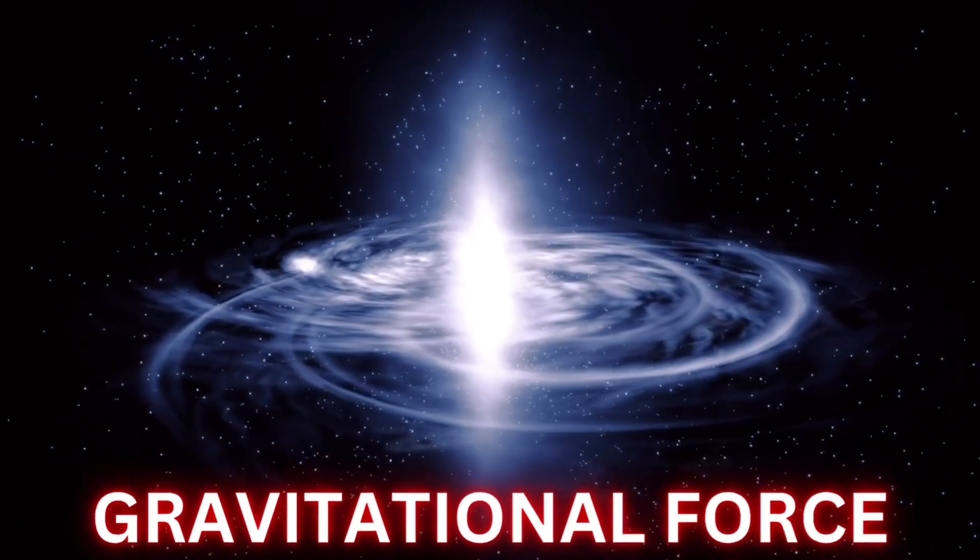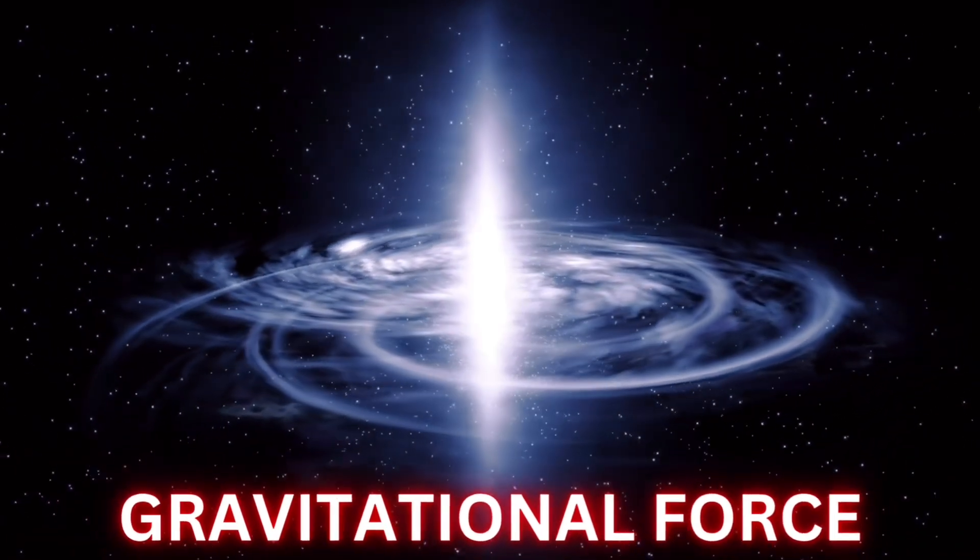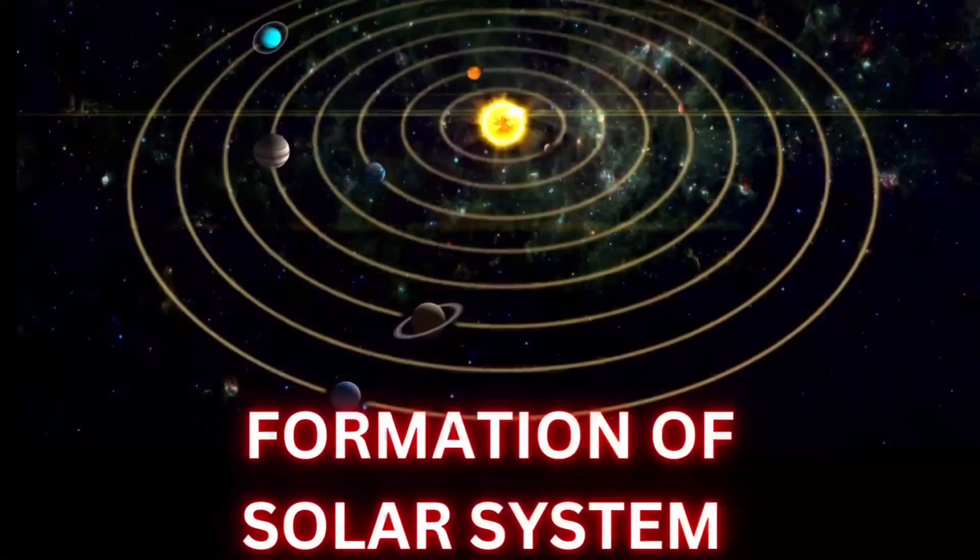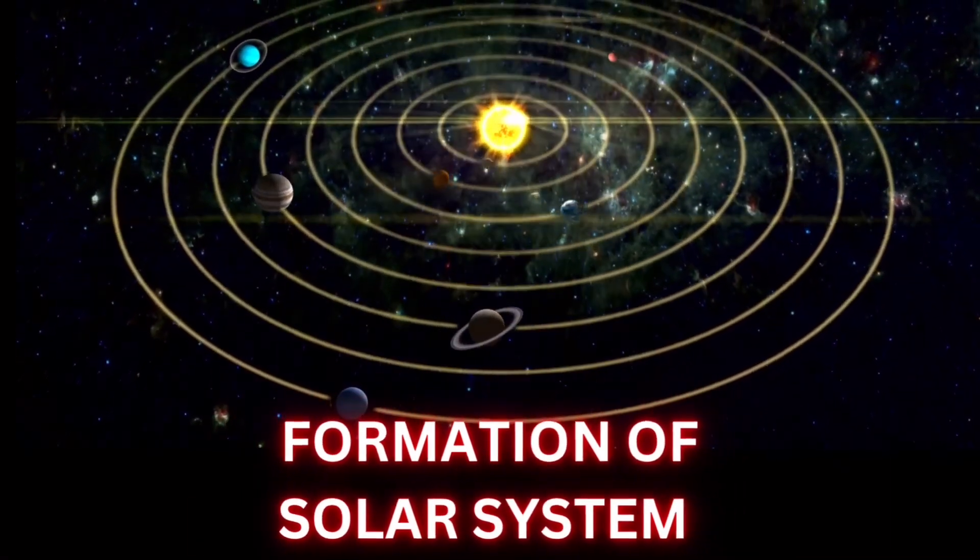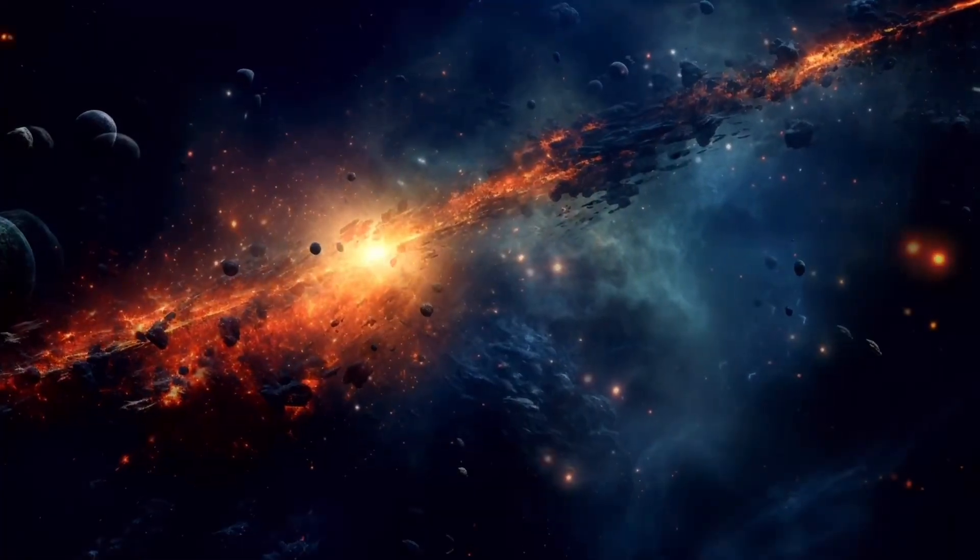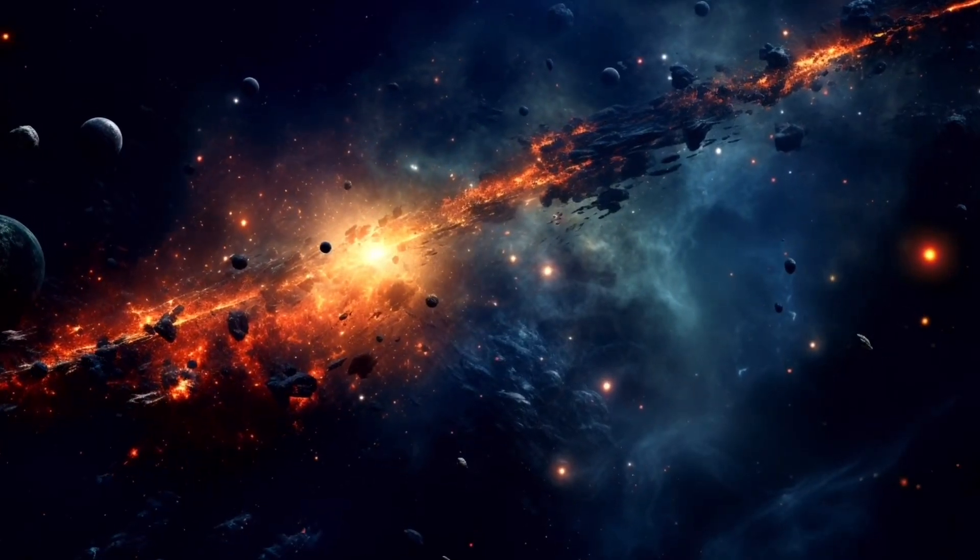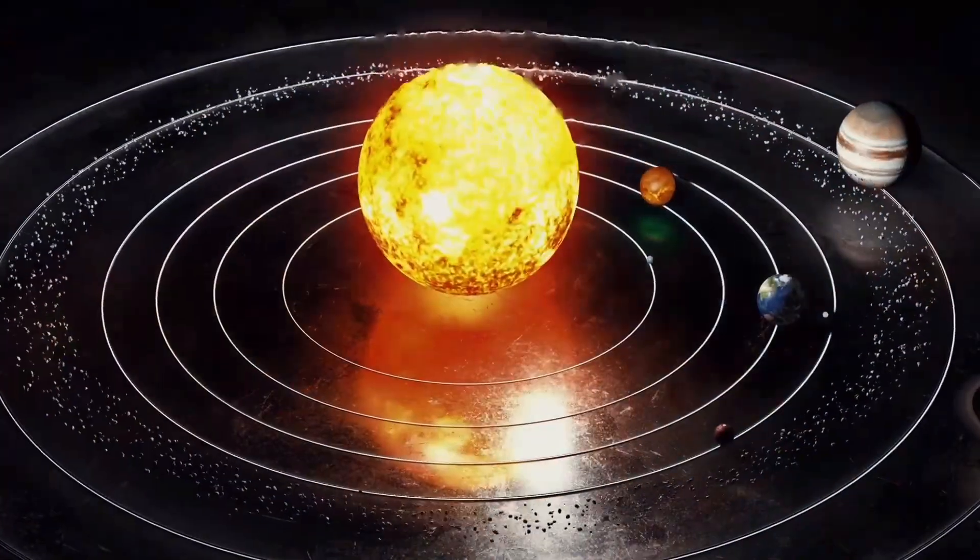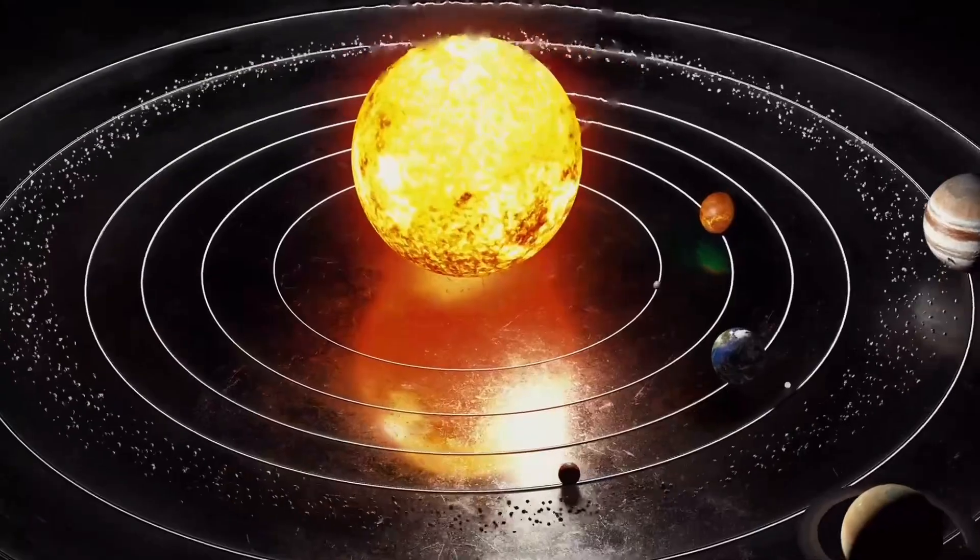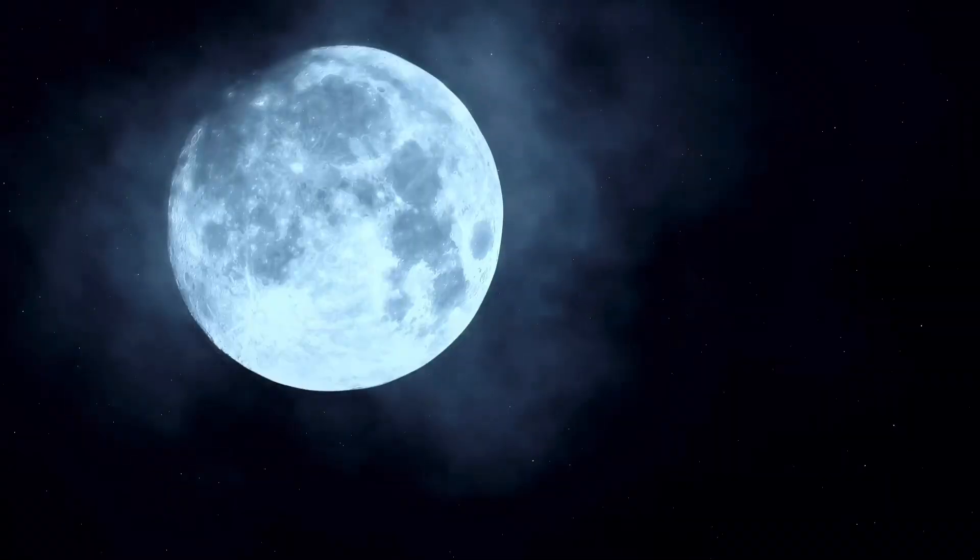Solar System Formation: While the Sun was forming, the remaining material in the protoplanetary disk also began to form into planets, moons,